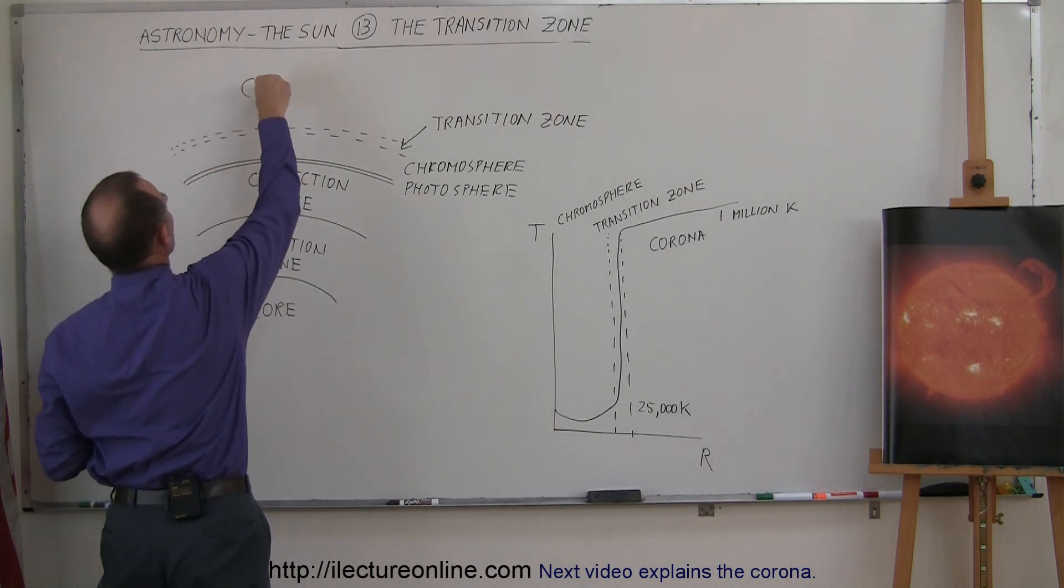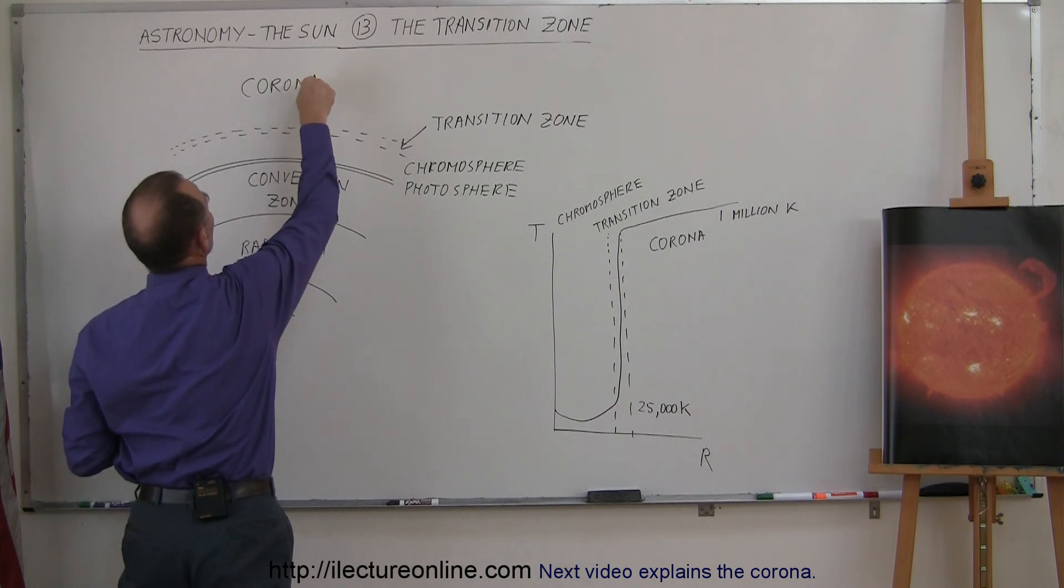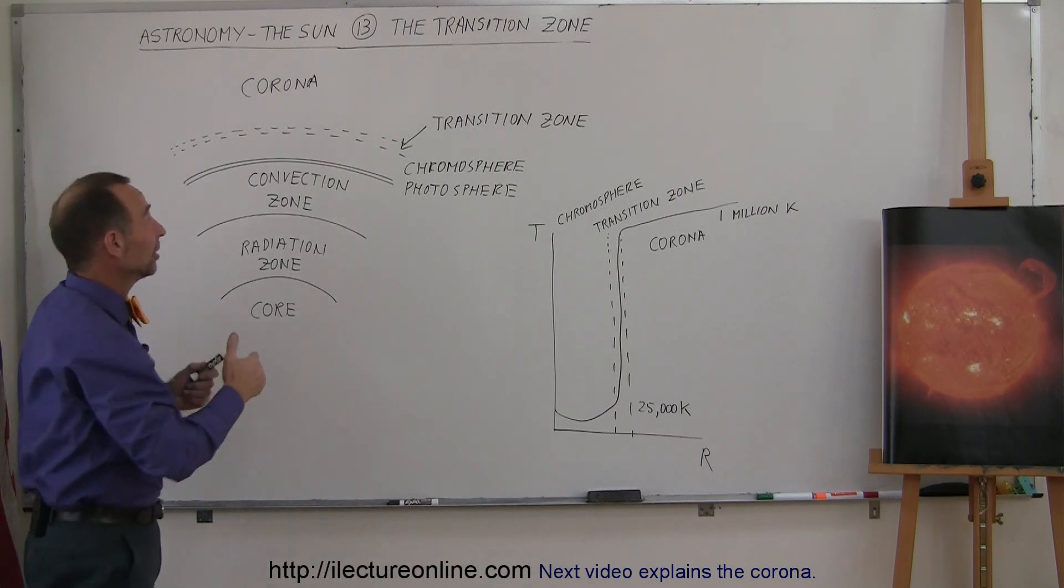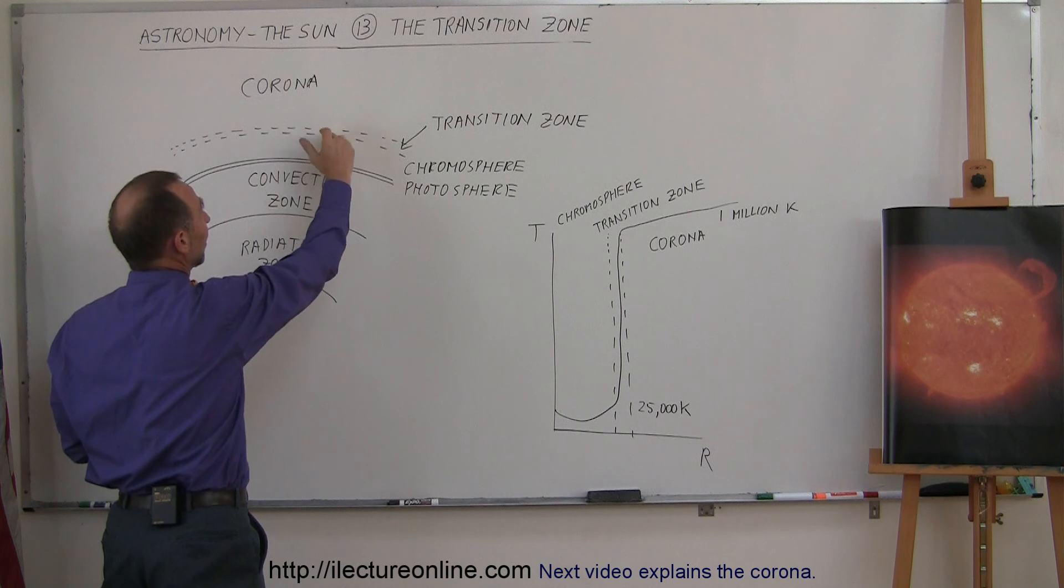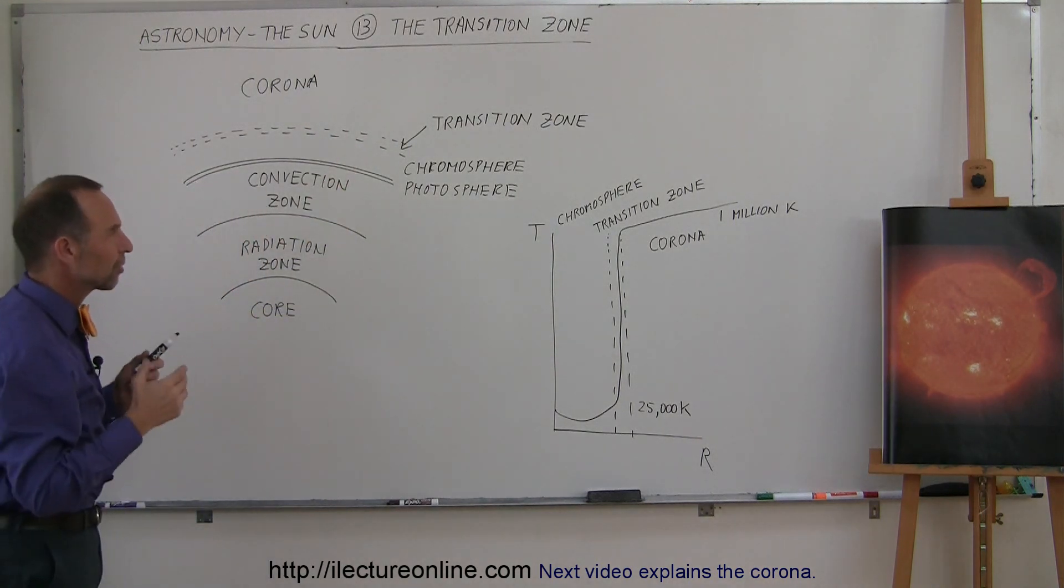Here's the corona. Physically, there's nothing special about the transition zone. It's made out of the same material that the chromosphere is made out of. So it's part of the atmosphere of the sun, and it's no different in material from the corona. So what's so special about the transition zone?